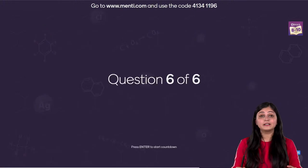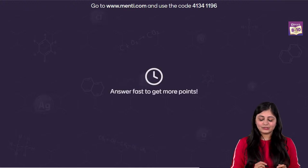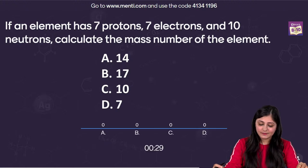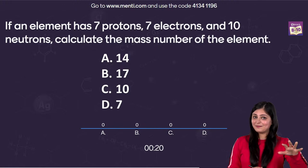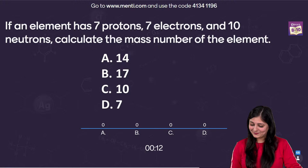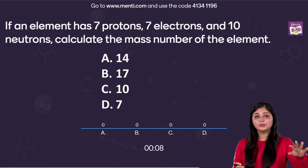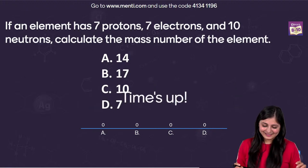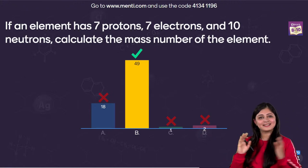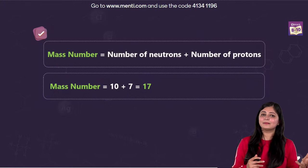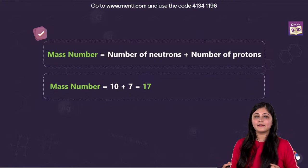This is the final question — all the very best. If an element has 7 protons, 7 electrons, and 10 neutrons, calculate the mass number of the element. I'm really hoping for a unanimous answer — you people are really well prepared. Most of you got this one right. Mass number is nothing but number of neutrons plus number of protons: 10 plus 7 equals 17. You can take a sigh of relief because you marked the correct answer.